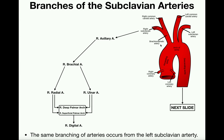In the previous video we talked extensively about the branching of the aortic arch, so in this video we're going to continue with the subclavian arteries and talk about how they distribute blood to their corresponding arm. The right subclavian artery shown here is identical to what we see on the left side — just replace all the R's with L's. The only difference is that the right subclavian doesn't come directly off of the aortic arch, as discussed in the previous video.